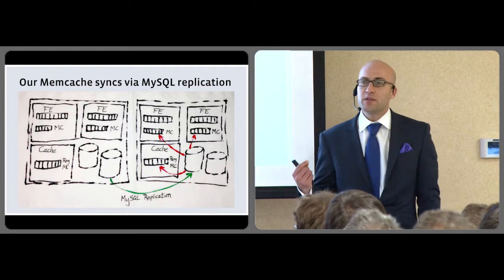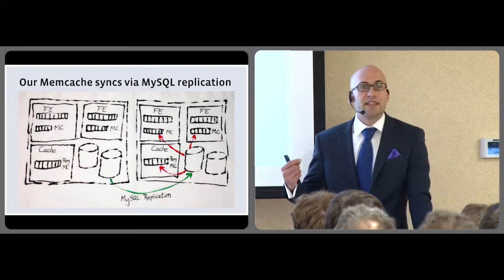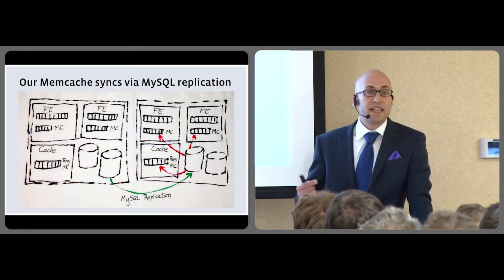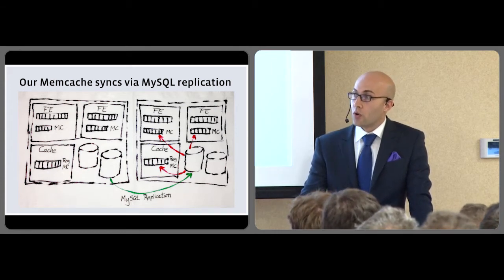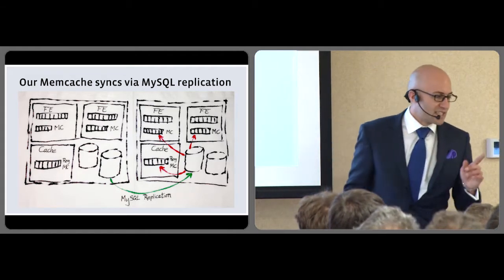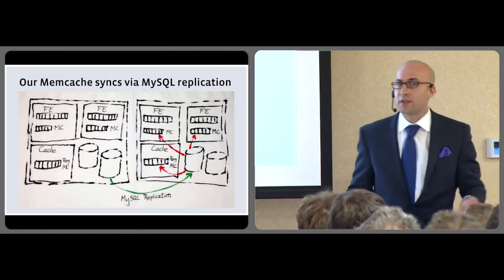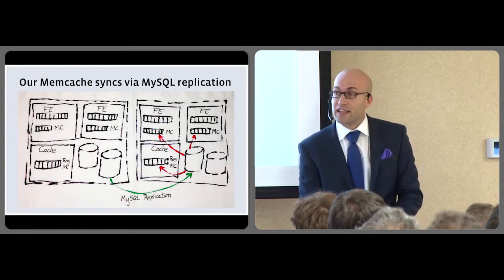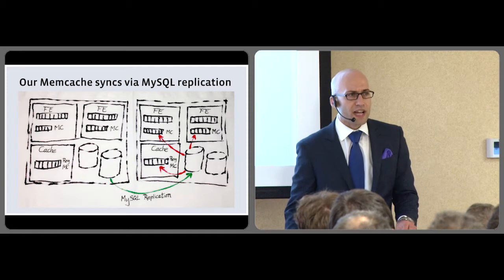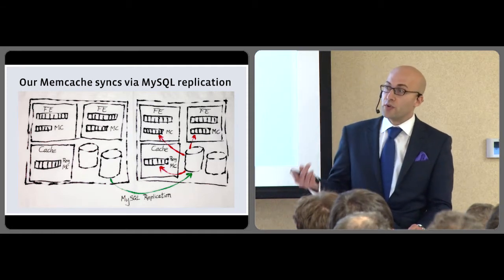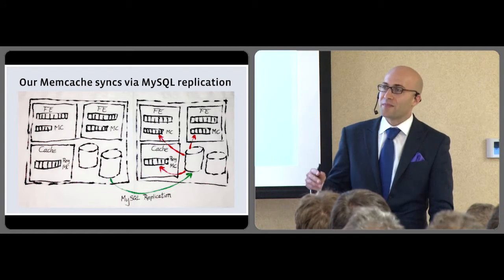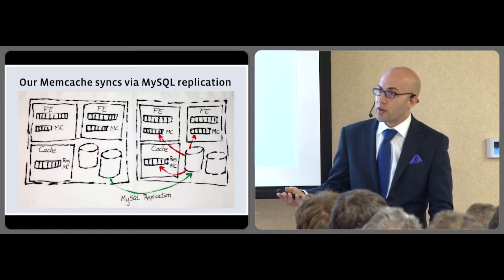We have a daemon called Aqueduct that is listening to the MySQL replication log, and that's going to send invalidation messages to all the local cache machines in the slave region. It's interesting to note at this point that we send invalidations rather than filling the new values, and the main reason for that is that we can reorder invalidations. We can spool them. We can replay them if we're recovering from an outage.